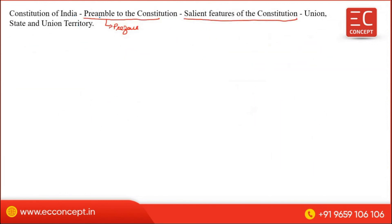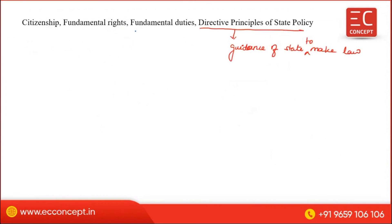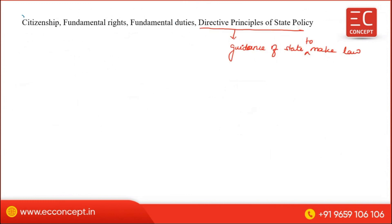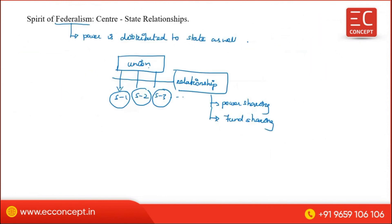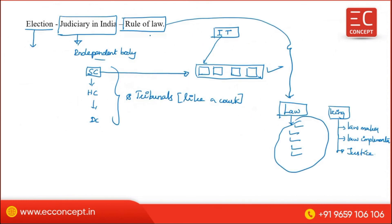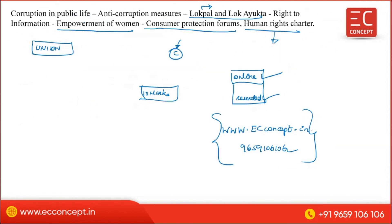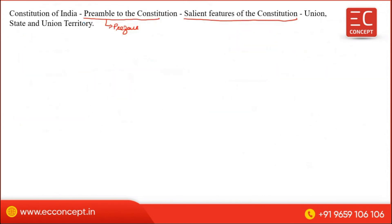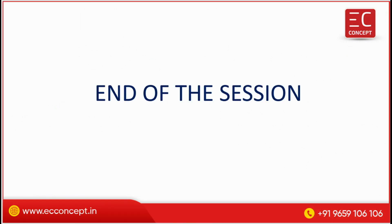If you subscribe to this course, we give you an assurance of 10 marks. We have a detailed explanation for each and every chapter — Constitution of India, Citizenship, Fundamental Rights, Fundamental Duties, Directive Principles of State Policy, Union Executive, Union Legislature, system of government, constitutional framework, center-state relationship, rule of law, election, corruption, anti-corruption measures, right to information, empowerment of women, consumer protection forum, and human rights charter. Thank you.